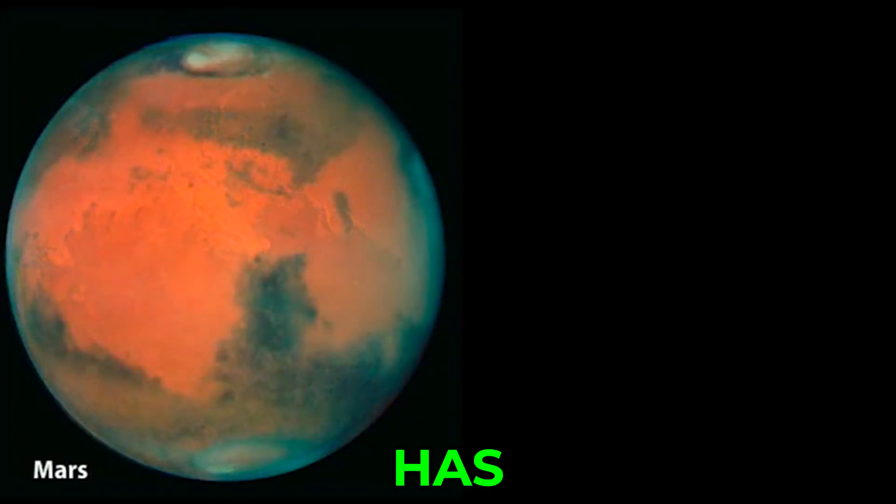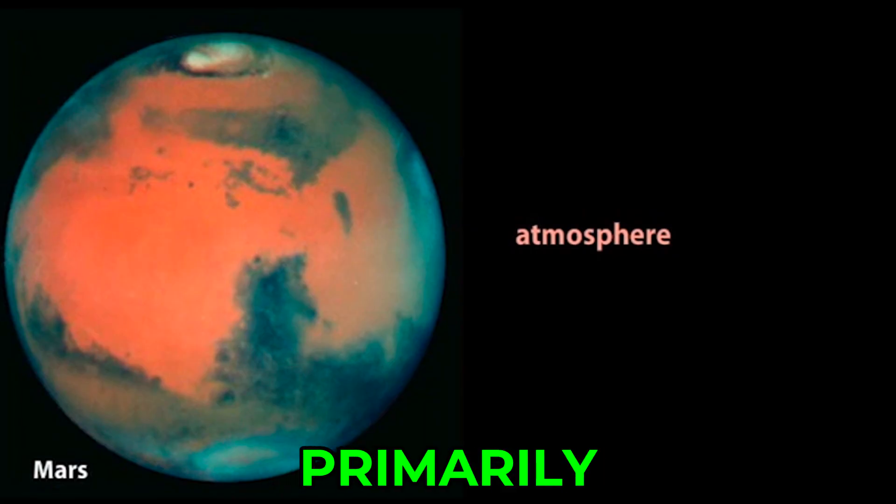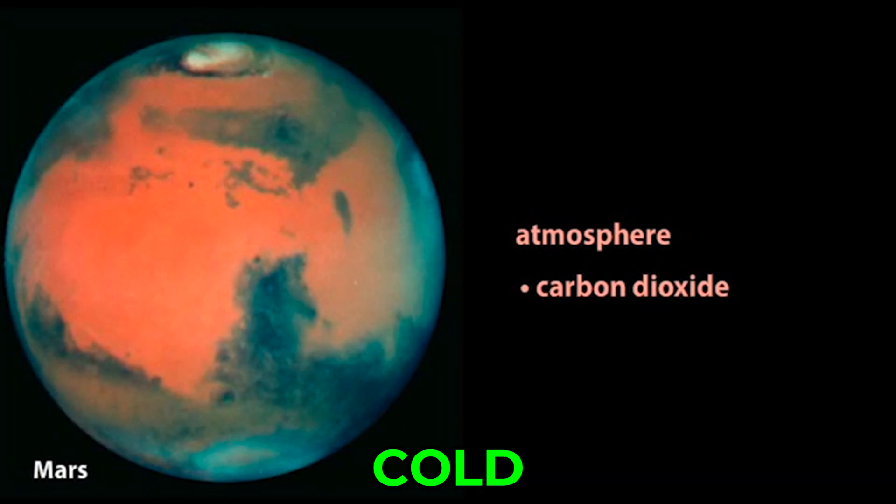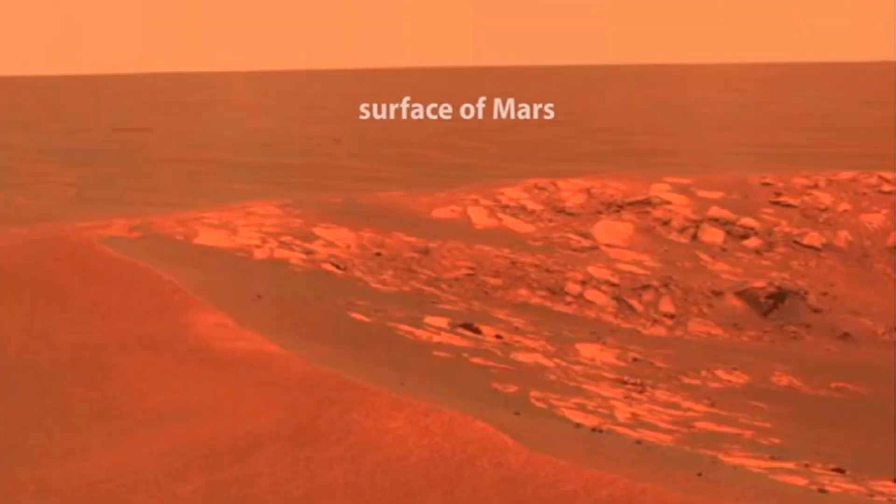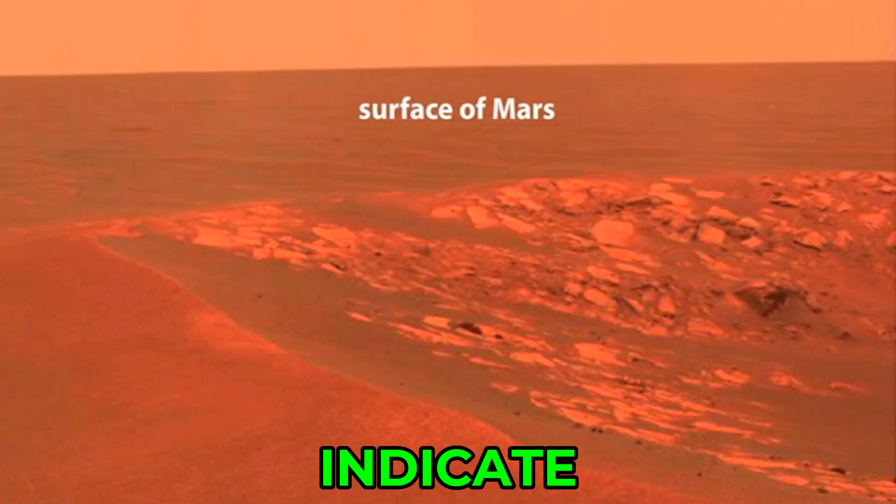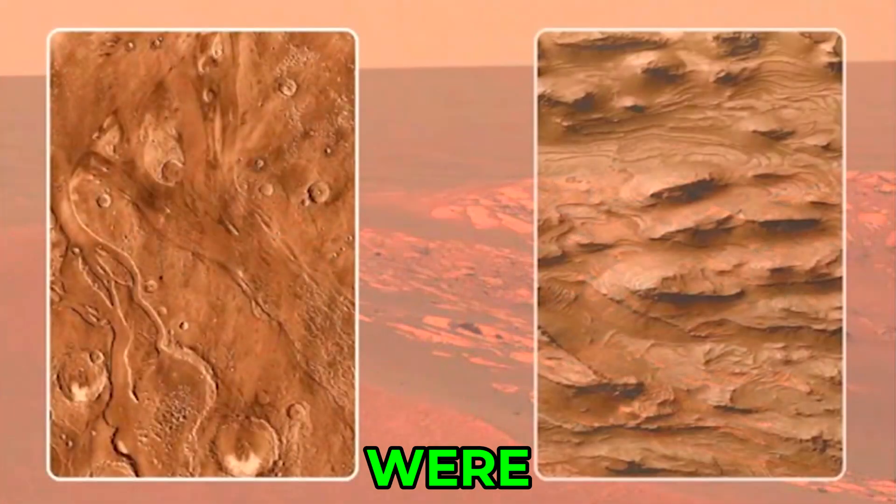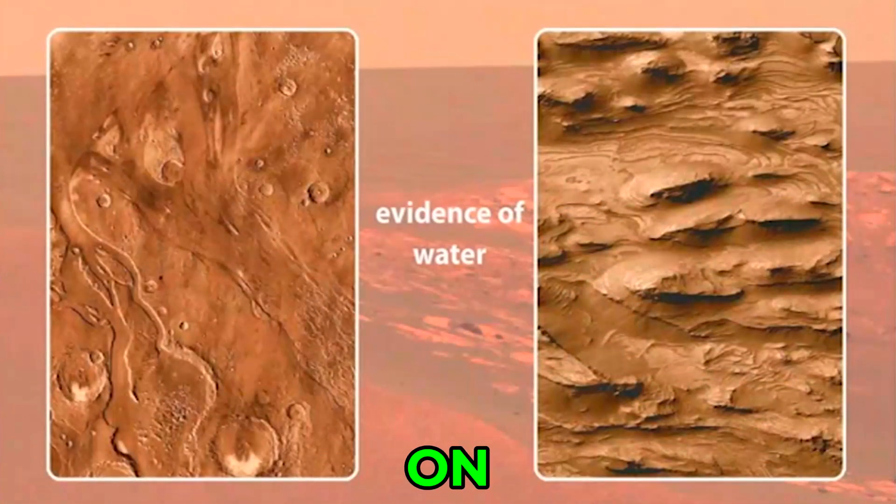Mars has a very thin atmosphere composed primarily of carbon dioxide. The surface is cold, dry, and dusty, with frozen ice caps found at the poles. Landforms and rover samples indicate that in the past there were large amounts of liquid water on the surface.